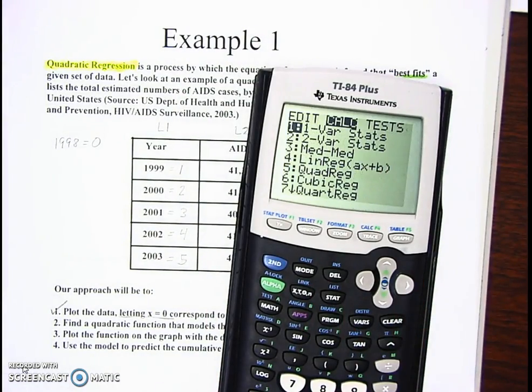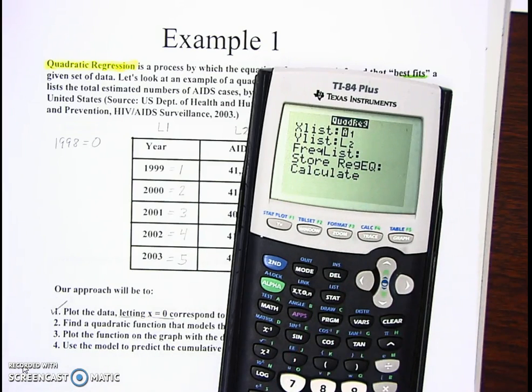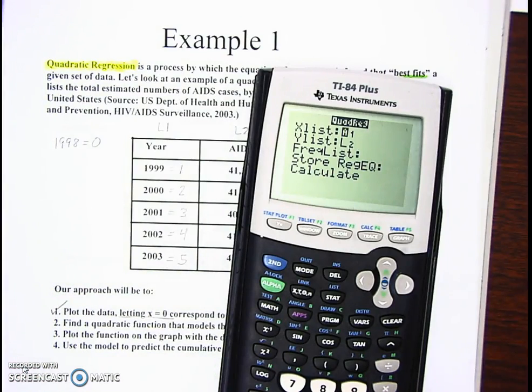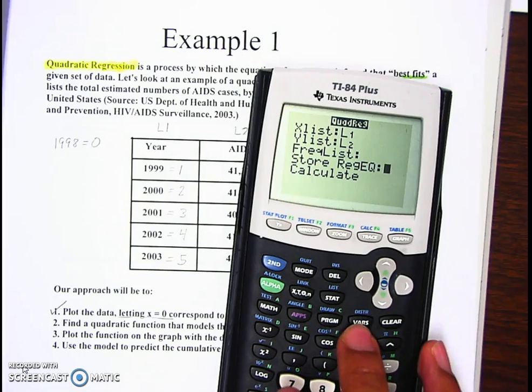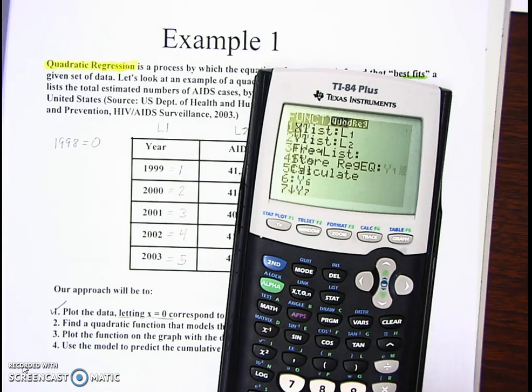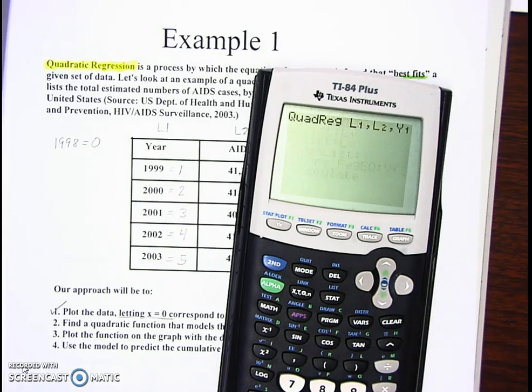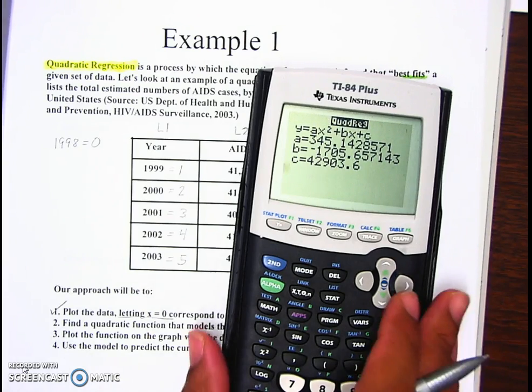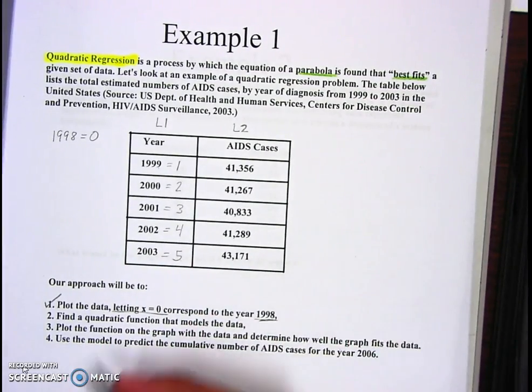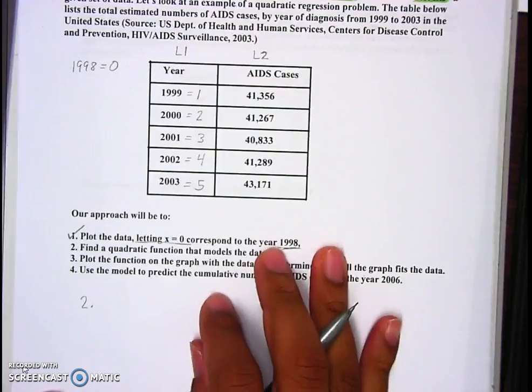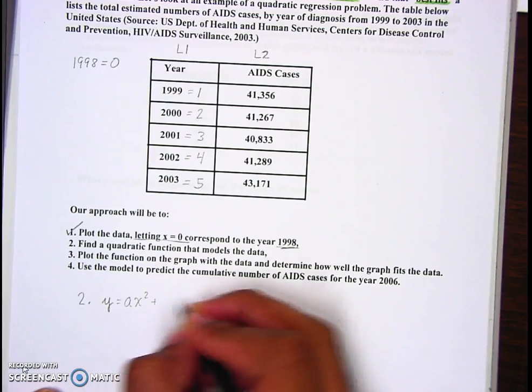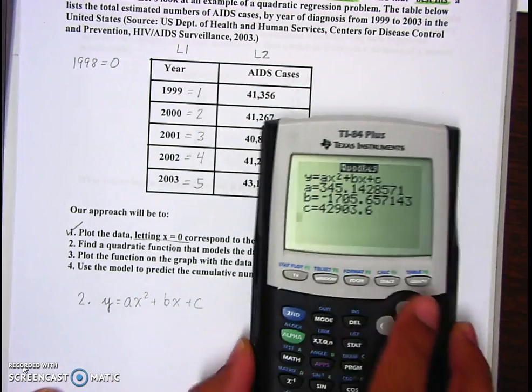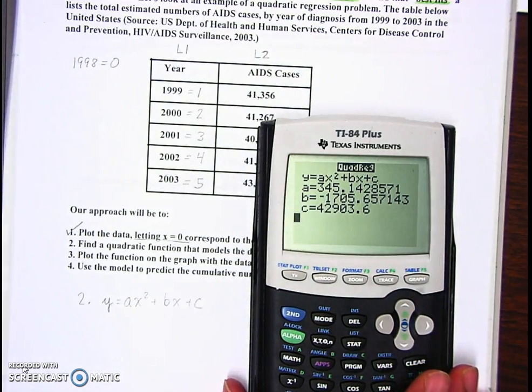You must follow exactly because if not it's going to throw you off completely. We hit STAT, go to the right, hit number five. At the top you see quad regression. Do not skip a step. We hit down three times, hit the VARS button, go to the right twice, go down and hit enter. That gave us an equation right here and we need to write that equation down.